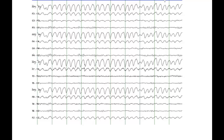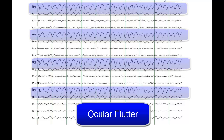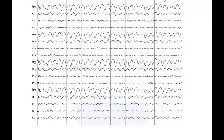This is an EEG — most of you who read EEGs should be able to make the correct diagnosis. This is ocular flutter, so it has nothing to do with epilepsy. What you see here is this rapid movement of the eyes. This is not eye blinking, but rather ocular flutter. The patient's eyes may or may not be open. You can also appreciate some alpha rhythm in the parietooccipital head regions.